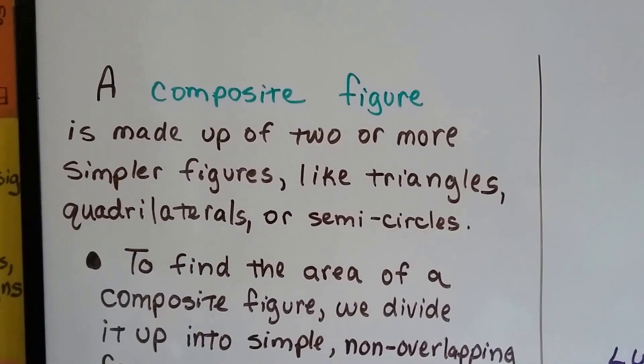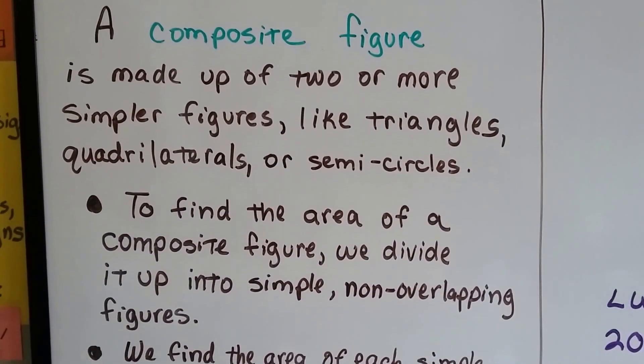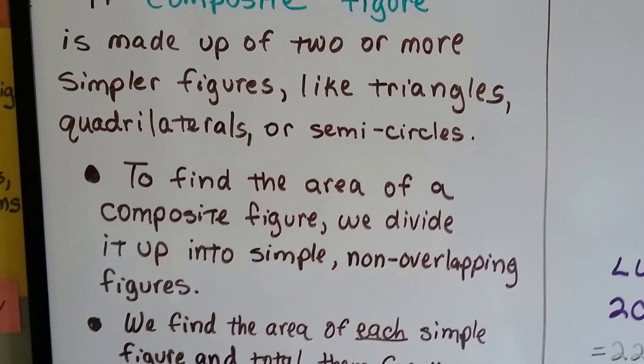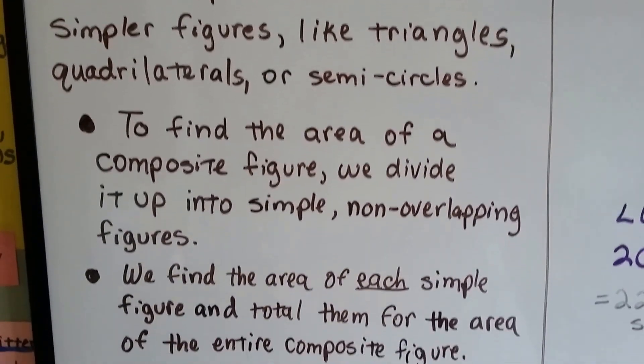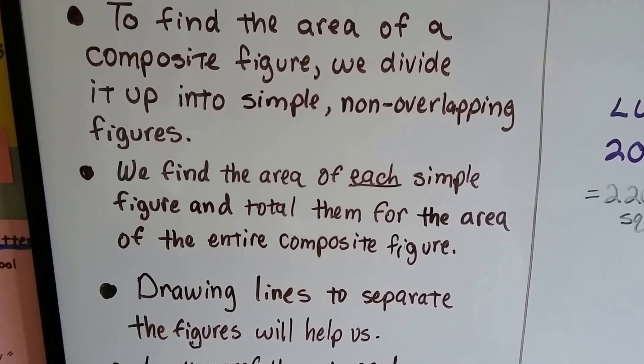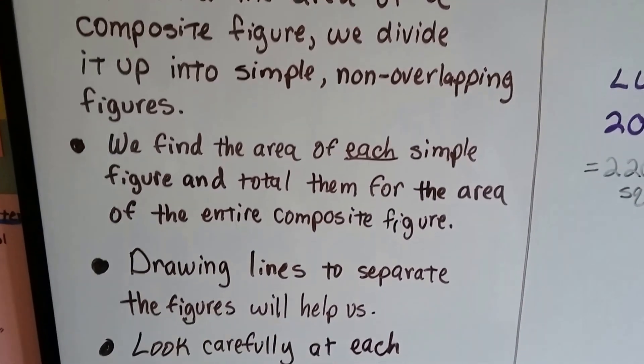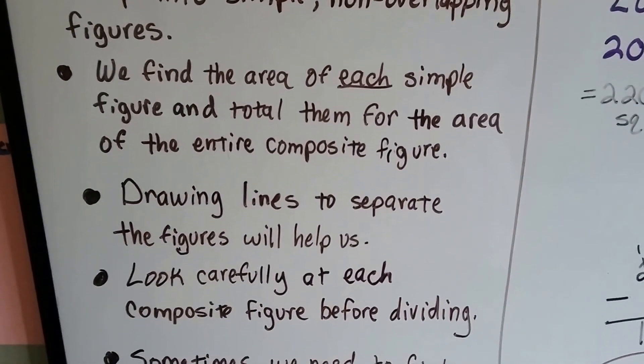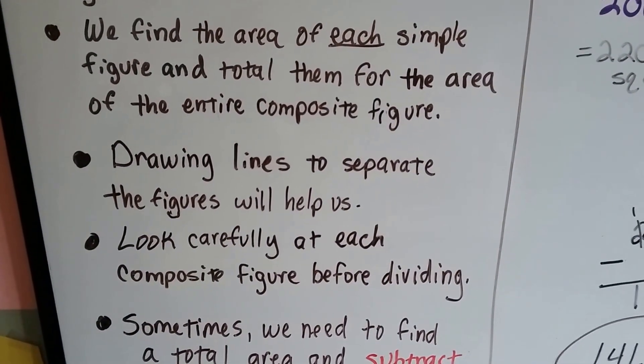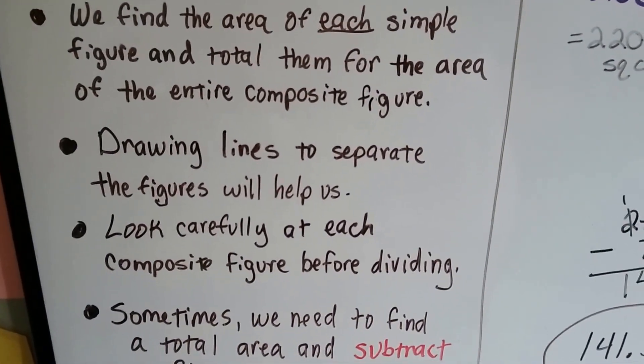We've learned in the last couple of videos that a composite figure is made up of two or more simpler figures like triangles, quadrilaterals, or semicircles. To find the area of a composite figure, we divide it up into simple, non-overlapping figures and find the area of each simple figure and total them for the area of the entire composite figure.